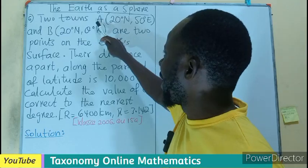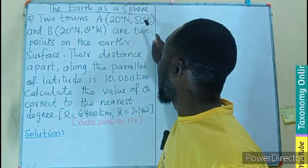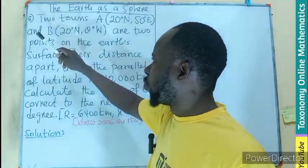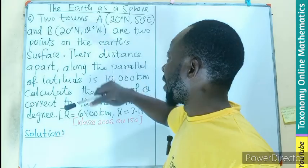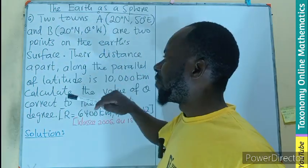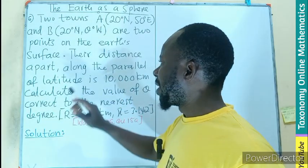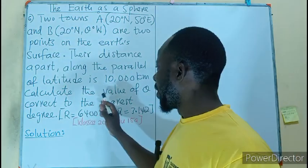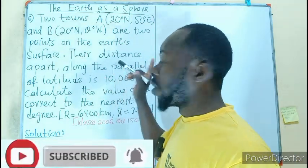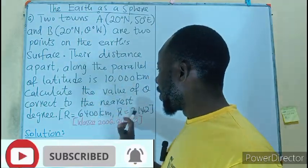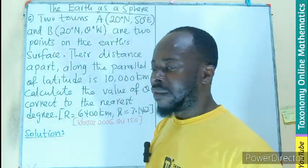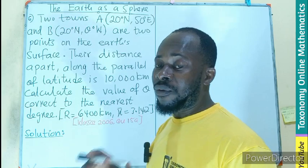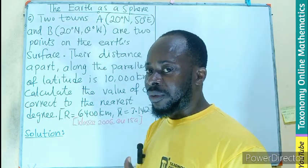Two towns A (20°N, 50°E) and B (20°N, θ°W) are two points on the earth's surface. Their distance apart along the parallel of latitude is 10,000 kilometers. We have to calculate the value of theta, the longitude angle for town B correct to the nearest degree, taking the radius of the earth to be 6,400 kilometers and pi as 3.142.